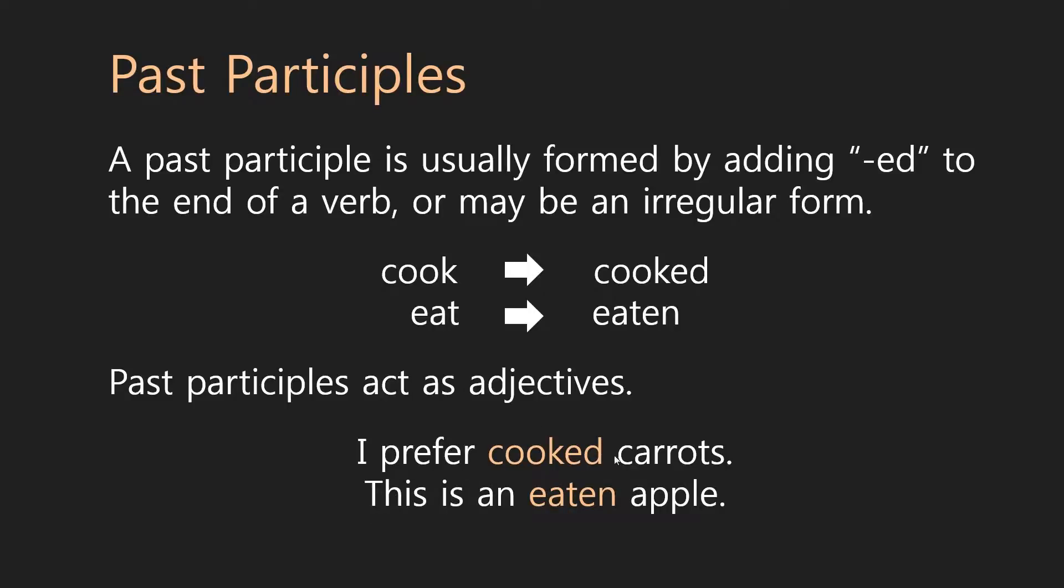So, here we're saying the carrots are cooked. So, cooked still describes the carrots. The difference is that it's describing something that was done to the carrots. Rather than describing what the carrots are doing. Okay. And that makes sense. Because if you think about it, doing is an ing word. Whereas done is the past participle. So, if you're doing something, you use a present participle. If something was done to it, you use the past participle. Okay. So, I prefer cooked carrots. This is an eaten apple. Okay. It's not an uneaten apple. It's an eaten apple.